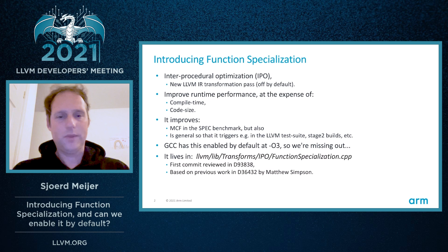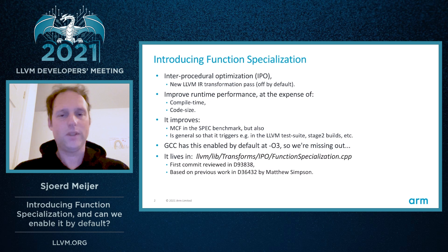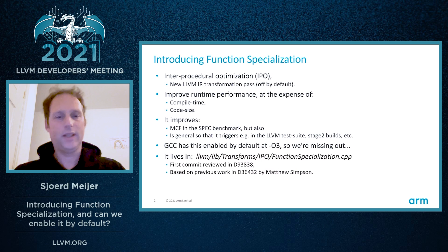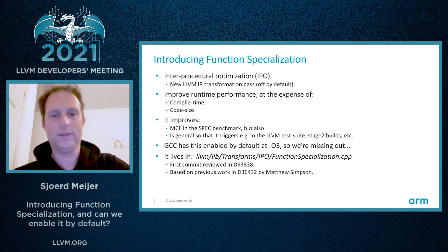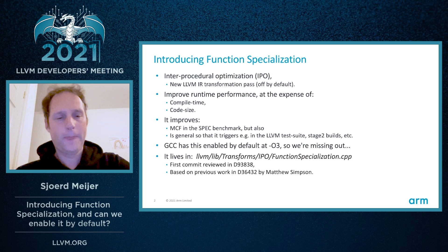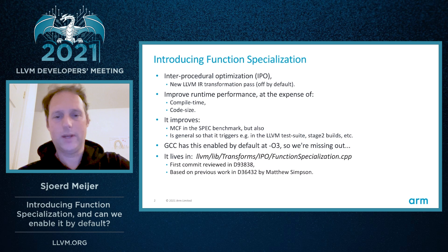The pass has actually been committed three or four months ago, and it lives at libtransforms/ipo/functionspecialization.cpp. It was based on previous work done quite a while ago by Matthew Simpson.